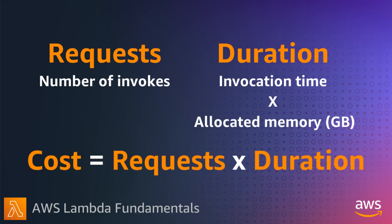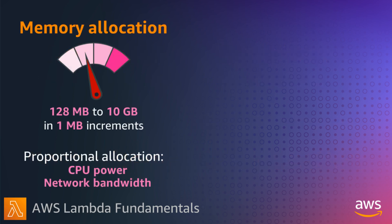The duration price also depends on the amount of memory you allocate to a function. You can allocate any amount of memory between 128 MB and 10 GB in 1 MB increments. In the Lambda resource model, you choose the amount of memory you want for your function and are allocated proportional CPU power and other resources.